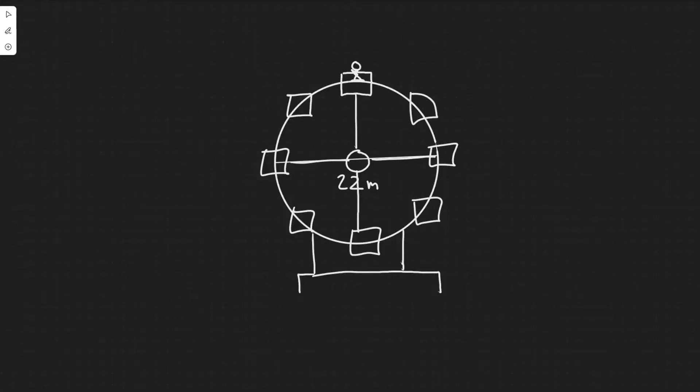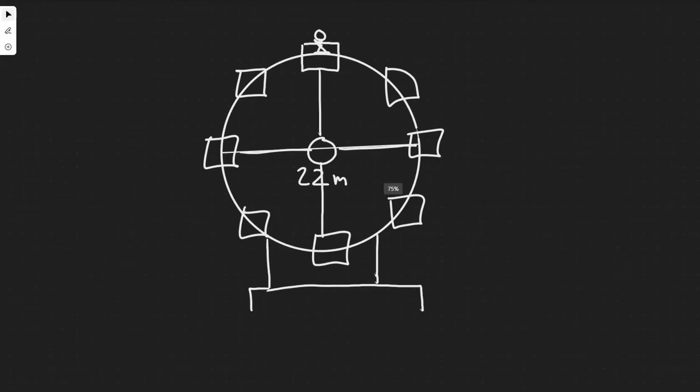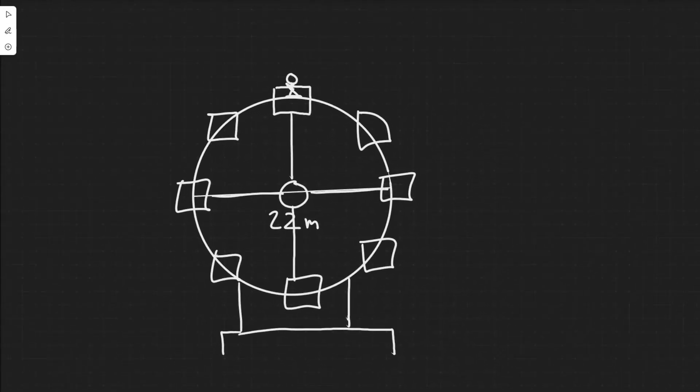In this problem we're told how many revolutions per minute would a 22 meter diameter Ferris wheel need to make for the passengers to feel weightless at the topmost point. So in this problem we're going to be solving for RPM, revolutions per minute.